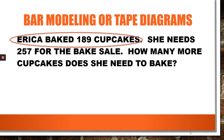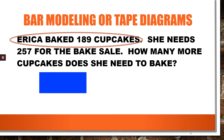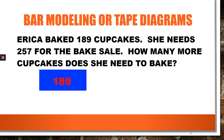Let's start with this first sentence: Erica baked 189 cupcakes. We're going to represent that with a rectangle, or a bar, and say that's 189. We have finished with that sentence, so we're going to line it out.